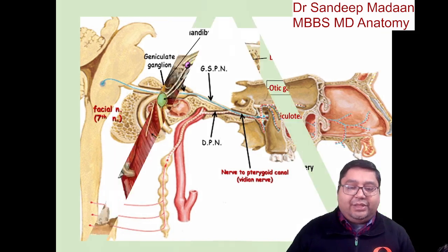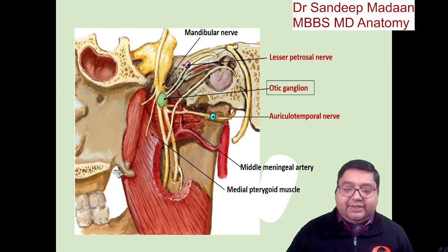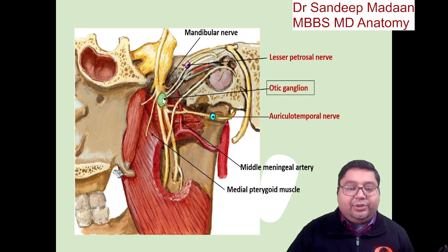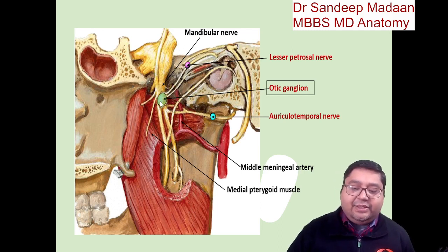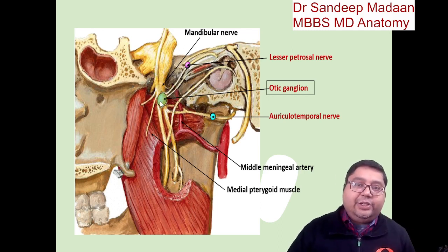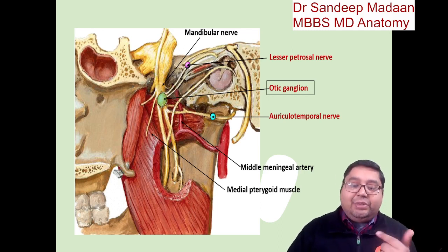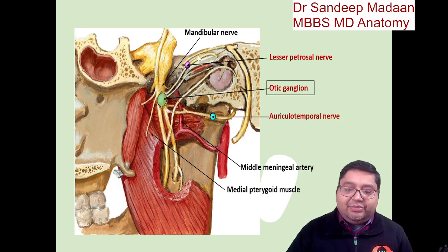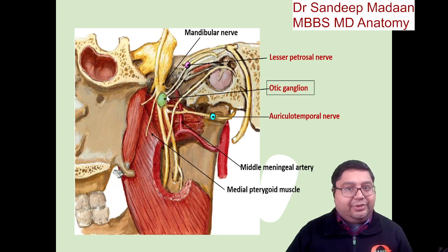Now let us look at the otic ganglion. The otic ganglion is present with respect to the mandibular nerve, meaning the mandibular nerve is holding it — so the mandibular nerve is the topographical nerve. The lesser petrosal nerve brings the preganglionic fibers to the otic ganglion, so the lesser petrosal nerve is the functional nerve for the otic ganglion.